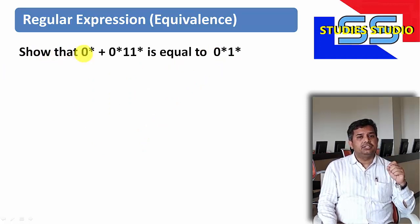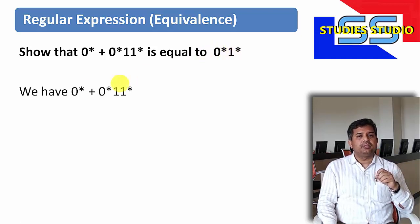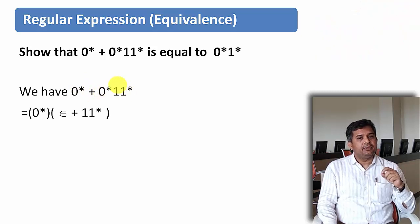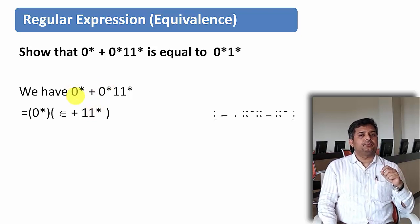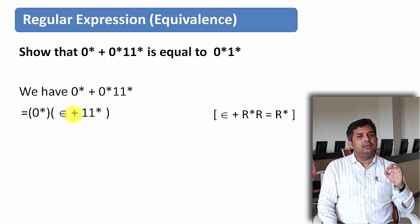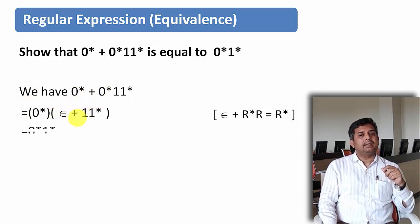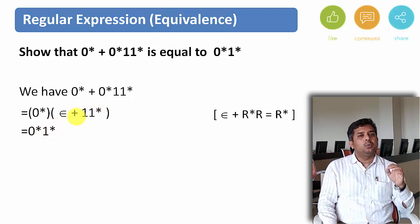We need to show that 0* + 0*11* is equivalent to 0*1*. We are having 0* + 0*11*. We can take 0* common from this expression, giving us 0*(ε + 11*). And we know that ε + 11* is nothing but 1*. So directly substituting, it becomes 0* · 1*. This is the proof.